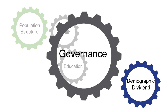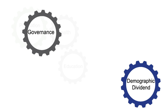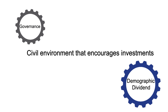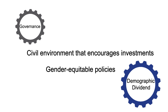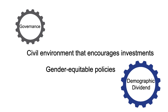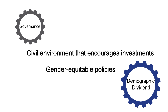A third strategic area for policies and investments is governance. This is critical to attracting the investments needed to stimulate economic growth. Civil environments that encourage people to invest are critical to a demographic dividend. People need to feel confident that laws are enforced, that governments are efficient, that corruption is minimized, and that when a contract is signed, it's actually enforced. At the same time, governance needs to include gender equitable policies. Women and girls need to have the same opportunities that men and boys have, and it's important that governments invest in efforts that overcome inherent gender-based barriers so that all people can contribute to the accelerated economic growth that the dividend promises.